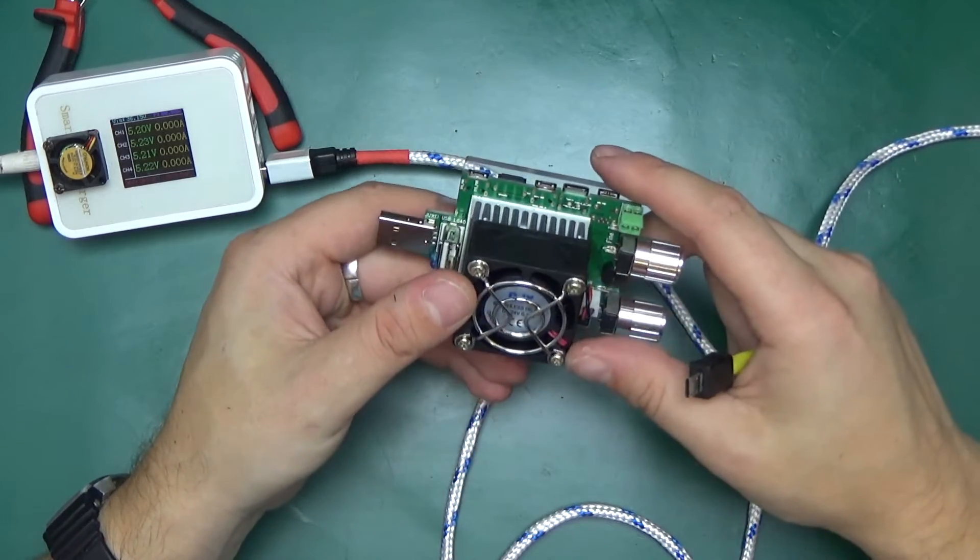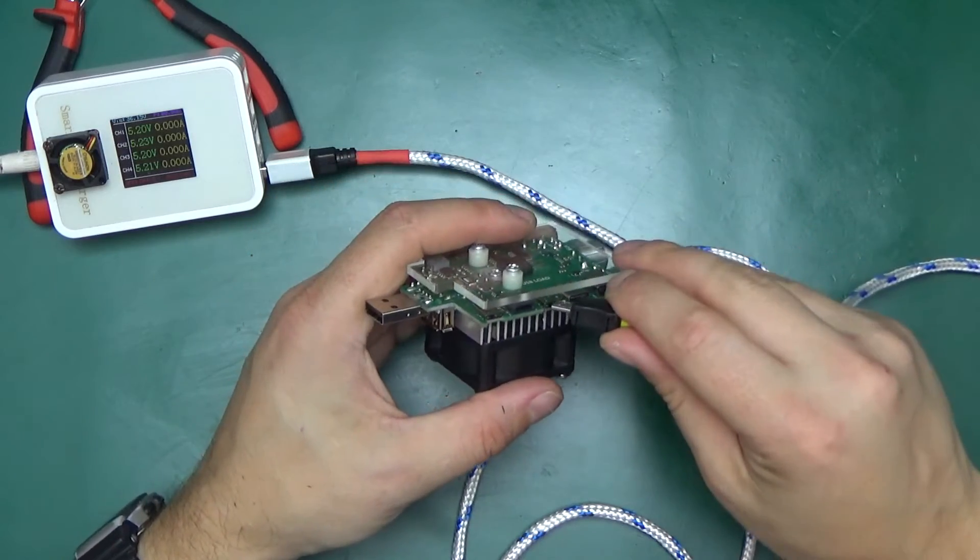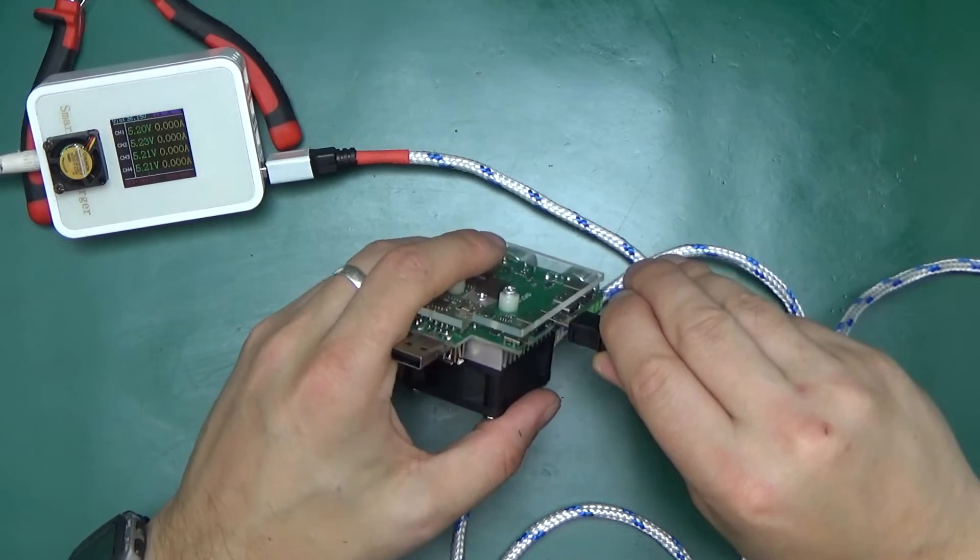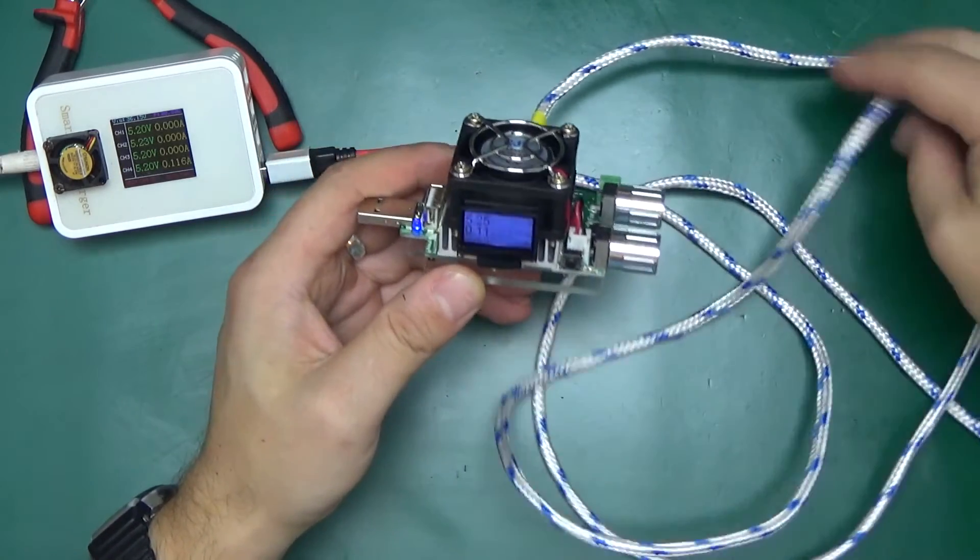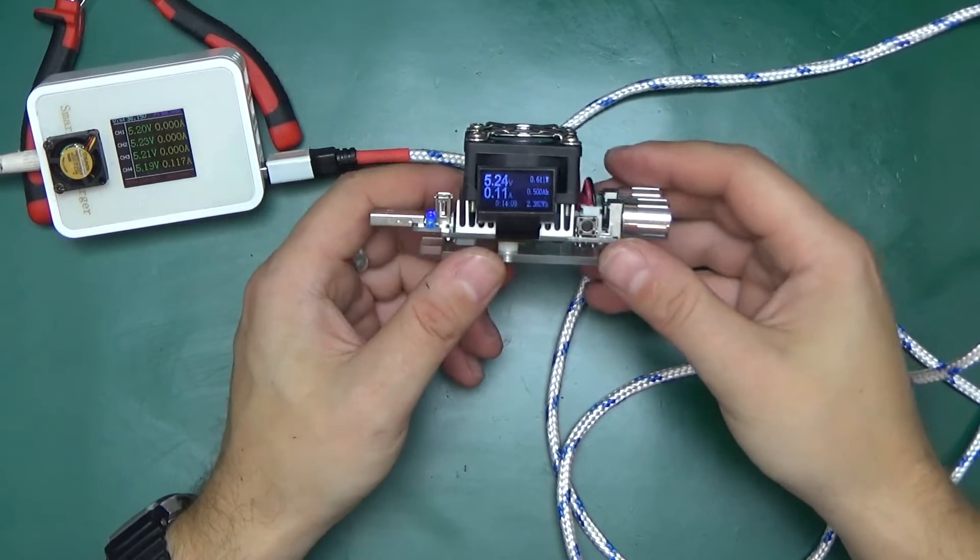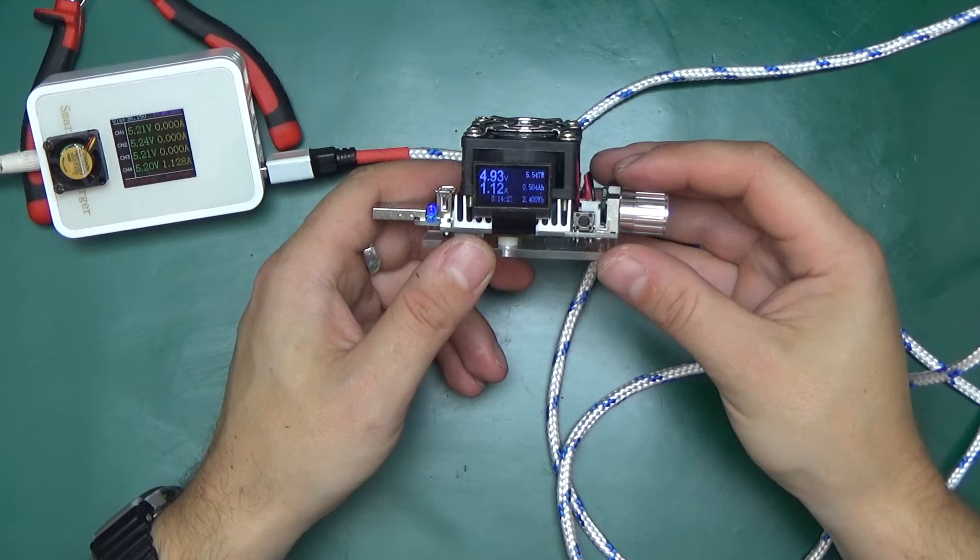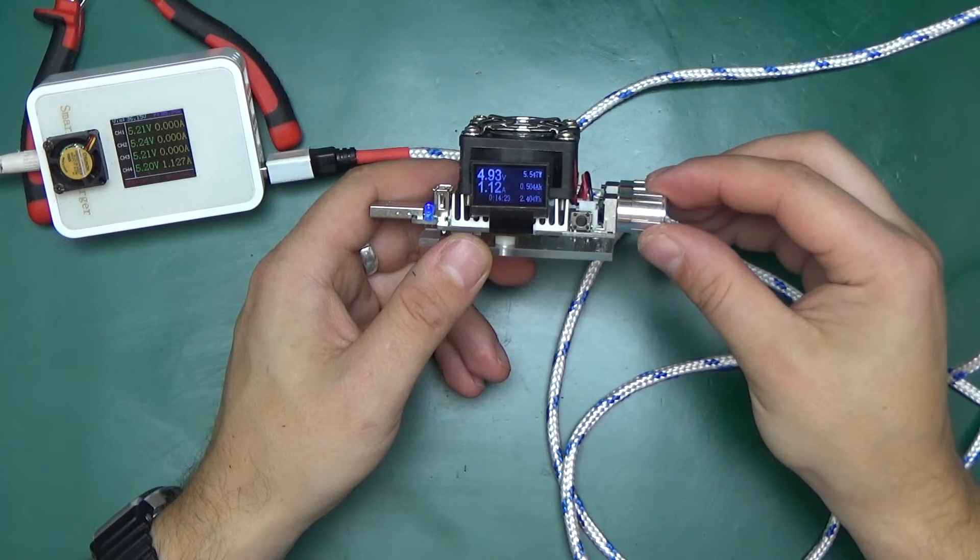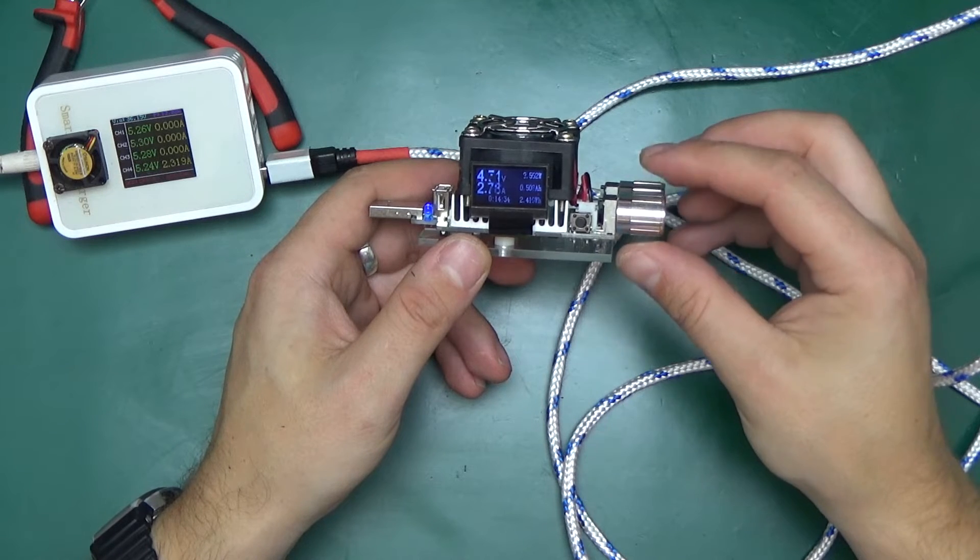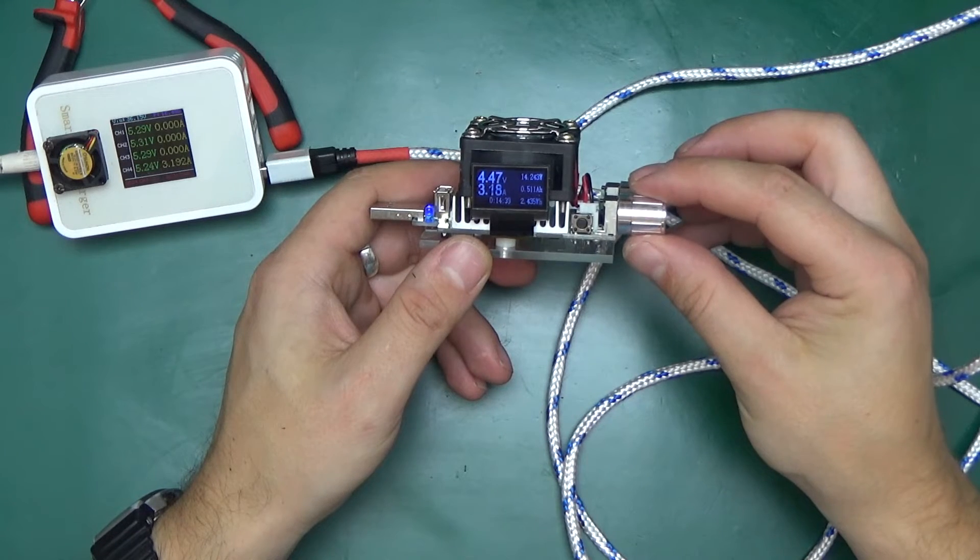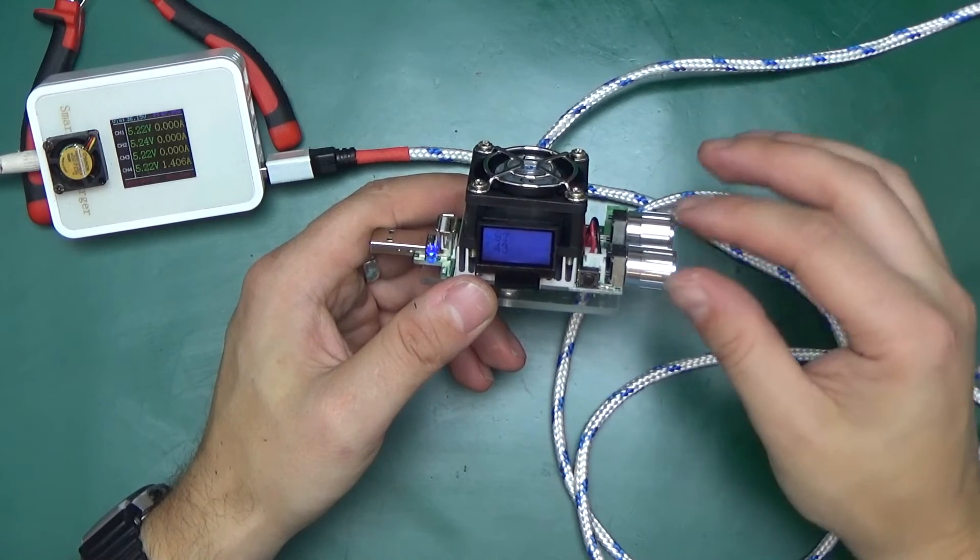Let's give it some load. I've got the DC load over here. We'll plug it into the micro USB port at the top. So what I'm looking for, remember that this is a two meter cable. At one amp, we've got 4.9 volts, so 0.1 volt drop. Let's up it to 2 amps, 4.7. 3 amps, 4.46 volts. It will happily do 2 amp charging and there wouldn't be any issues whatsoever.